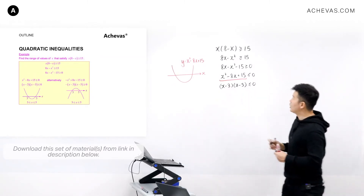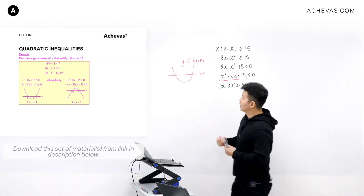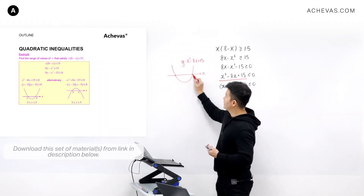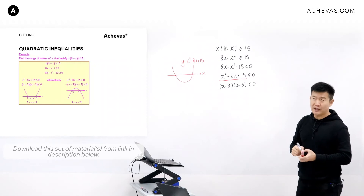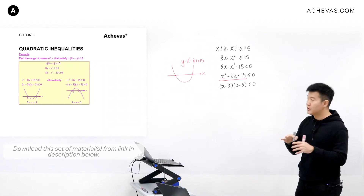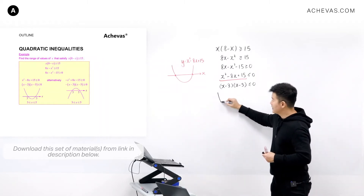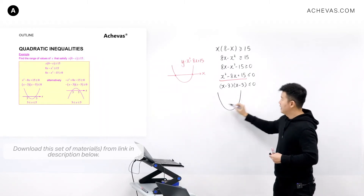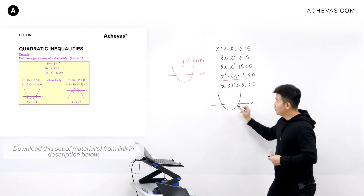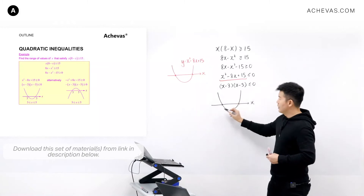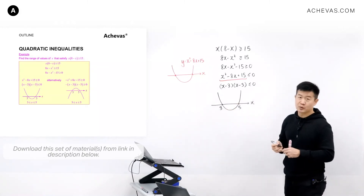So (x minus 3)(x minus 5) is less than or equal to 0. This tells me the x-intercepts are at 3 and 5. Now I know how to sketch this graph — a smiley face cutting the x-axis, with x-coordinates 3 and 5 at the two intersection points.